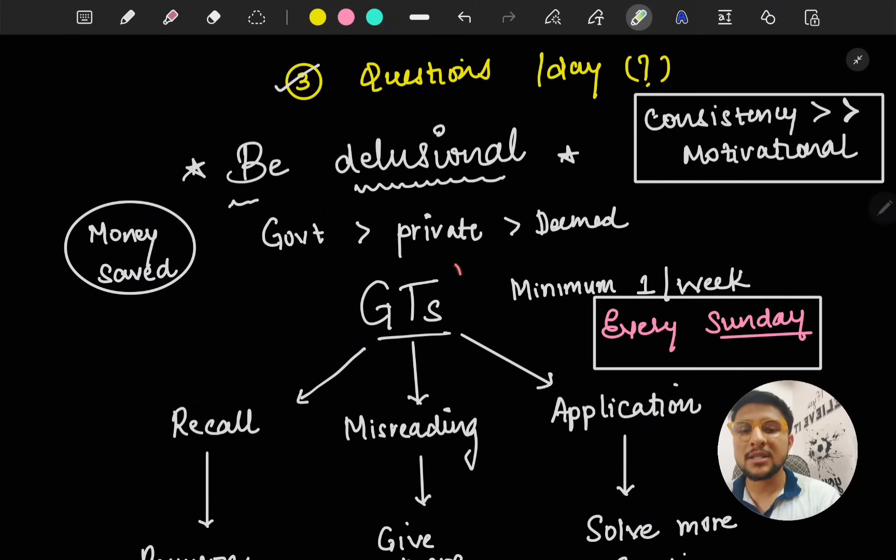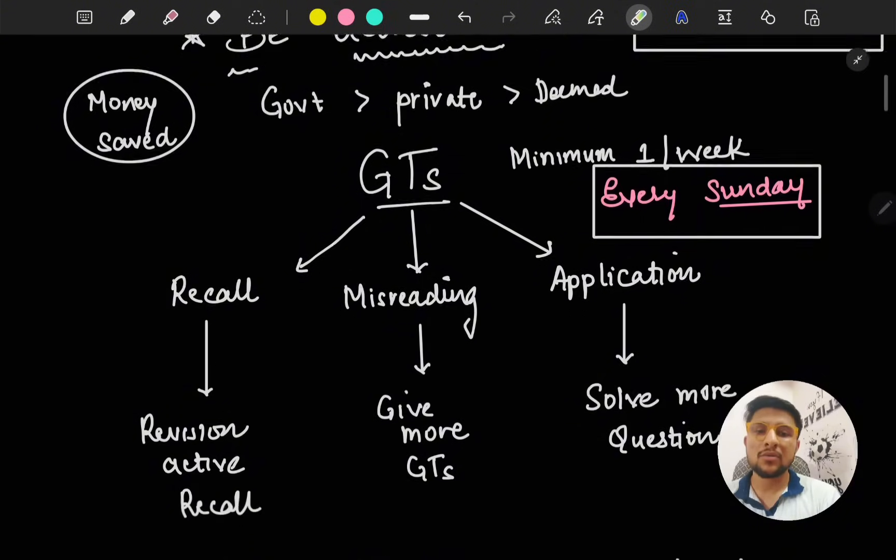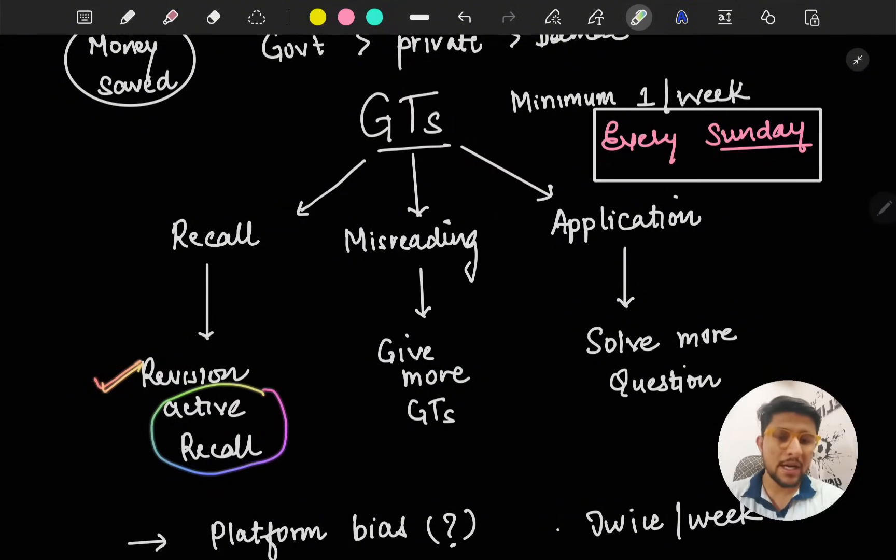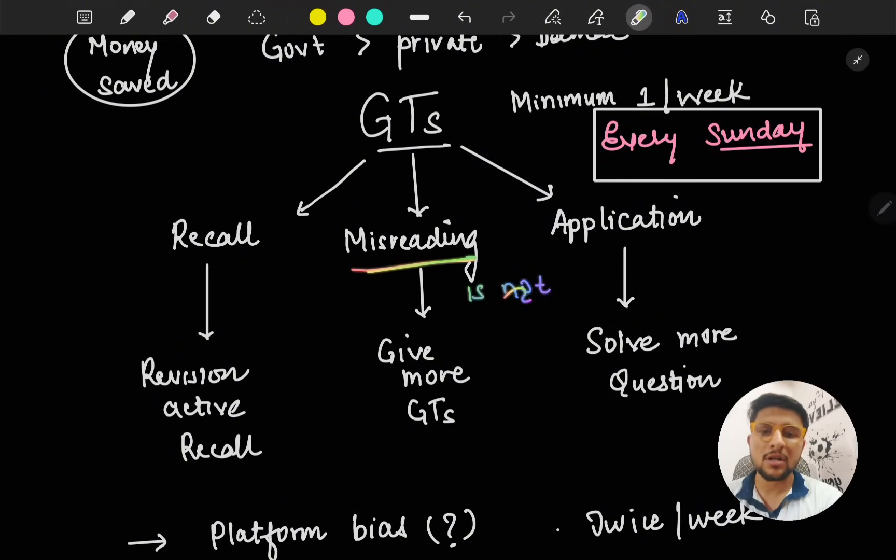Let's touch upon how to improve your marks in GT. There are three things to analyze: First is recall. If you have problems in recall, it means your revisions are not sufficient and you need more revisions. Try to involve active recall while doing this. Second is misreading of the question - missing out 'is not' or 'except'. This happens to everyone, even toppers. That can be removed by giving more GTs. It's not that you don't know the thing, so revision won't improve this.